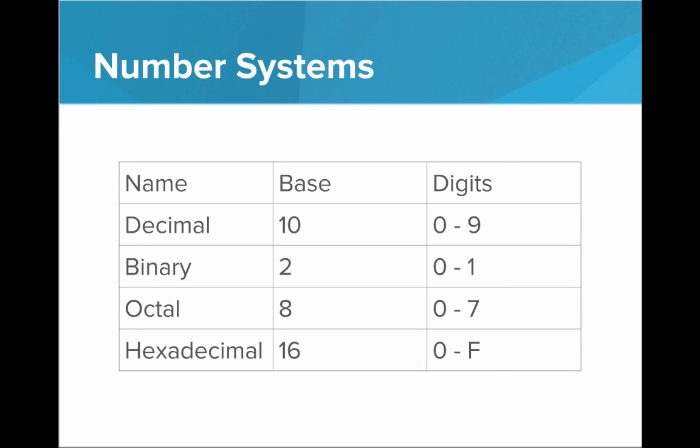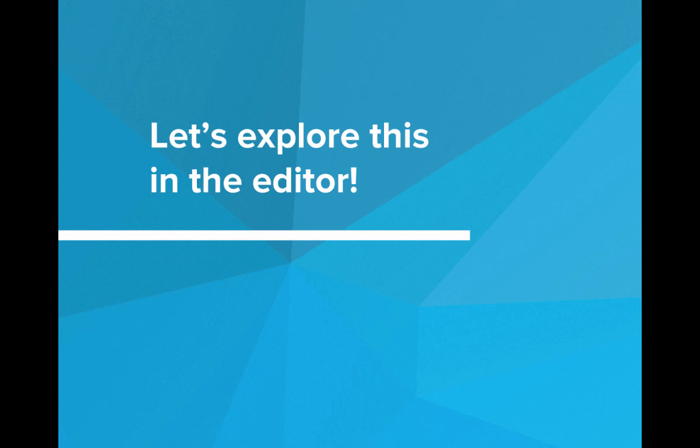So these are all the number bases that we should be familiar with. We know the decimal numbering system, that's base 10, digits 0 through 9. Then there's binary, which is base 2, digits 0 and 1. Octal is base 8, digits 0 through 7. And hexadecimal is base 16, using digits 0 through F. Let's explore number systems in the editor.